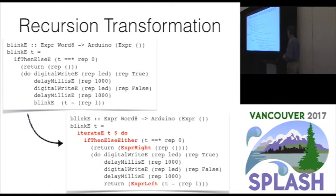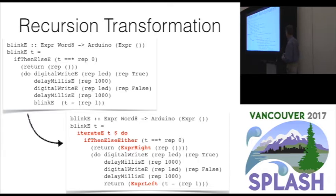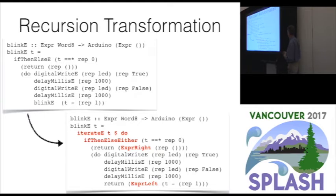There are a couple of limitations to our transform. It only handles functions of a single parameter — we could eliminate that by adding tuples to the DSL. It also only handles tail recursive functions — we don't handle mutually tail recursive functions, though that could also be solved by adding tuples to the DSL and reducing to a single tail recursive function.